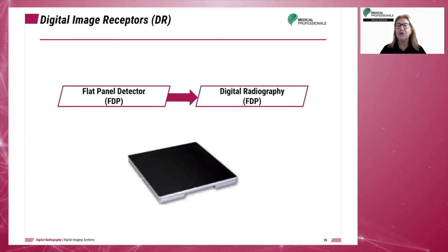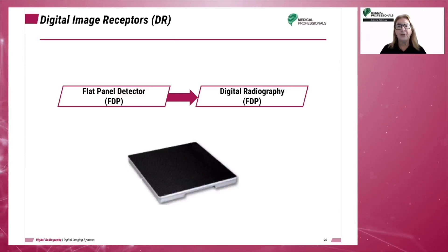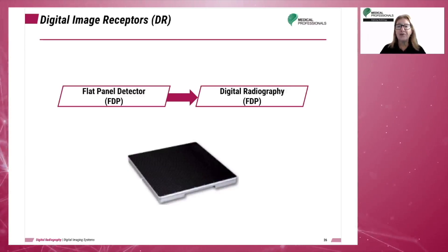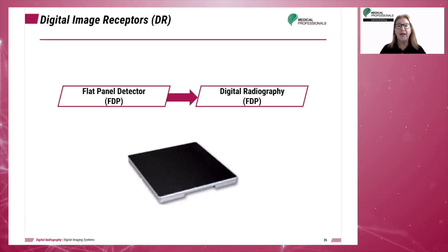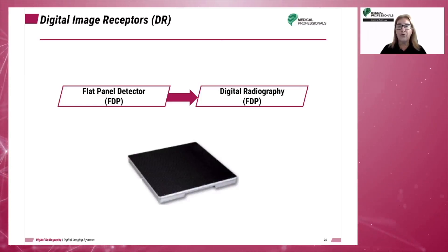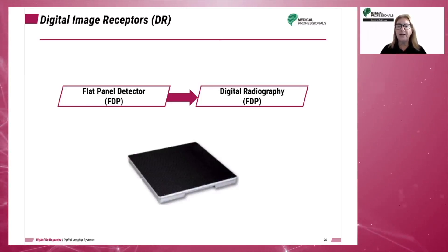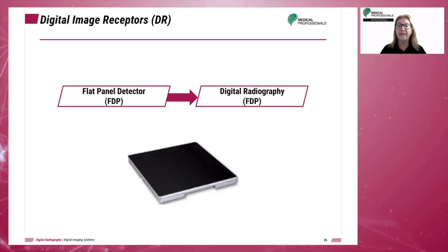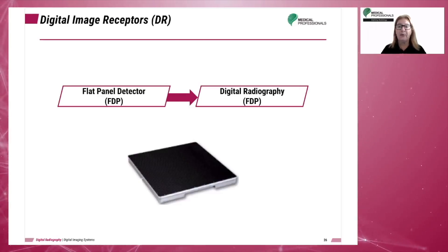DR is a term used to describe digital imaging receptors that do not require a plate reader. The image is captured and data is transmitted to the computer system for processing. The image receptor is immediately ready for a new exposure. DR may involve a cassette or be cassette-less, and has in many cases reduced the number of steps in the imaging process and eliminated the need for cassettes altogether, thereby somewhat reducing operating costs.